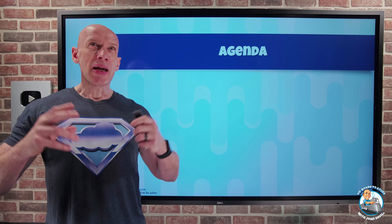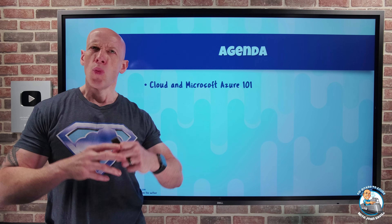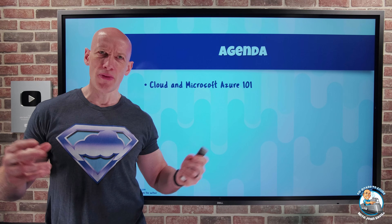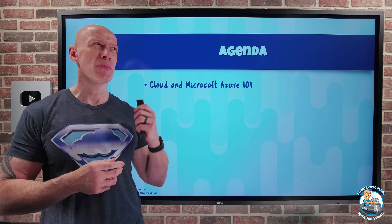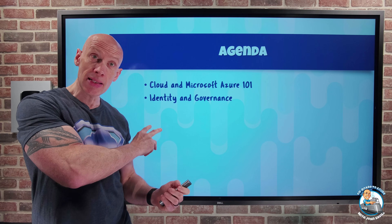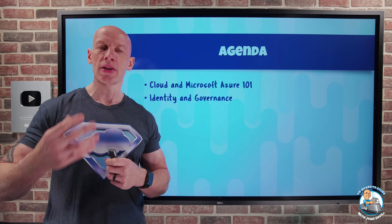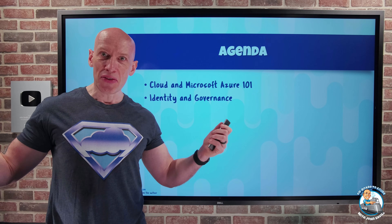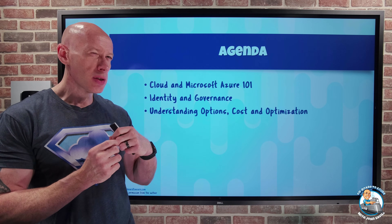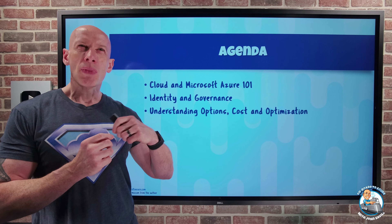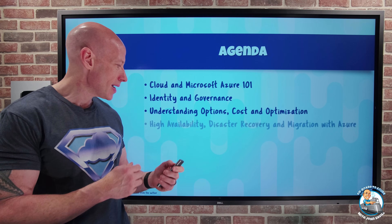The things we're going to cover as part of this course across all of the modules: we'll start with the basics — what is the cloud, what are the types of service, some fundamentals around Azure. Then we'll dive into specific aspects like identity and governance. We need to get these in place before we start trying to create services and run applications, and we'll cover the options available in the cloud, the cost aspects, and how to optimize those costs and the resources we're creating.